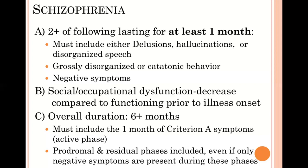We also look at how they have been functioning since the onset of the disorder. At least one area of functioning has to have fallen off markedly since the disorder began — perhaps they used to be able to keep a job but can no longer, or they previously attended school and done reasonably well but are no longer attending or have failed out. We're looking for a full six months of illness, though we've only required that they show active phase symptoms for that one month period. The prodromal and residual phases are included to reach that six-month time frame.